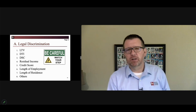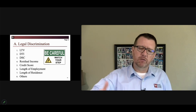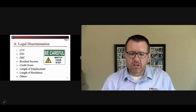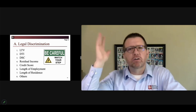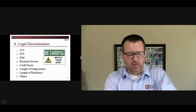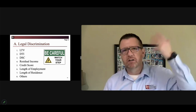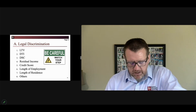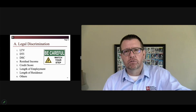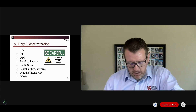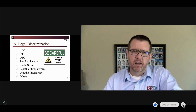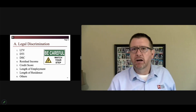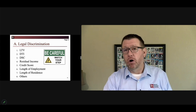Sometimes these legal forms of discrimination can border on and cross over into illegal forms. For example, credit score — you all use credit scores day in and day out. You pull credit reports, there's a score, you have a threshold, and it's pretty cut and dried whether or not it qualifies. Credit score is a legal way to discriminate, to decide whether to make a loan. But if that credit score somehow ties back to one of the eight protected factors we discussed, that's going to create a problem — and it happens more often than you'd think.